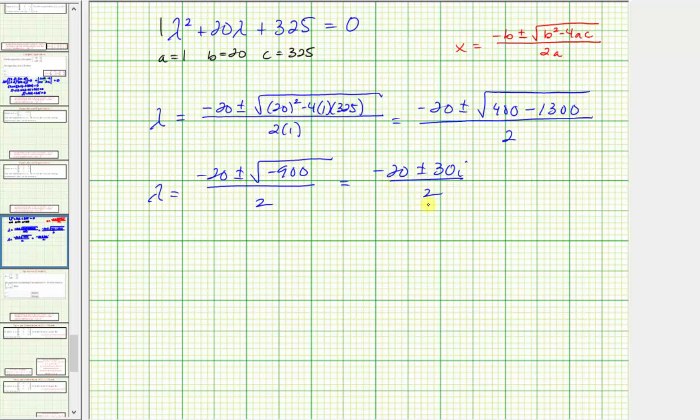Breaking this up into the real part and imaginary part, we have lambda equals negative 20 divided by two plus or minus 30i divided by two, which equals negative 10 plus or minus 15i.